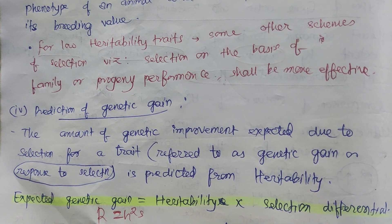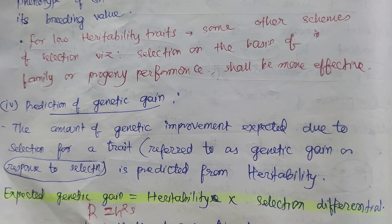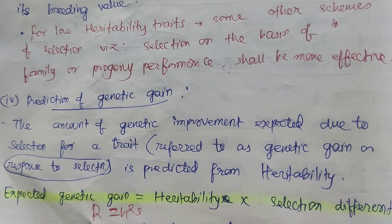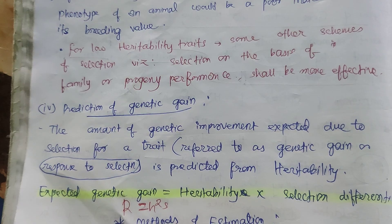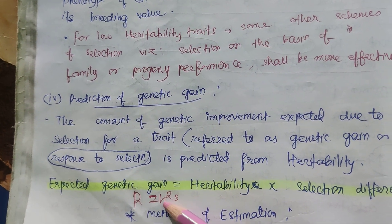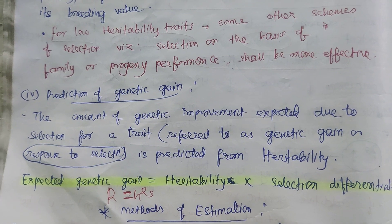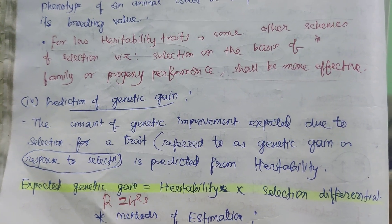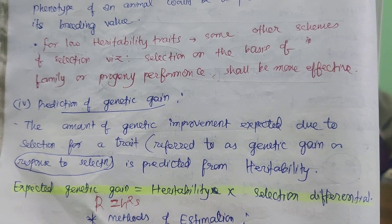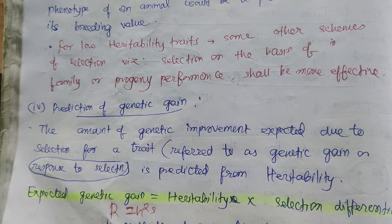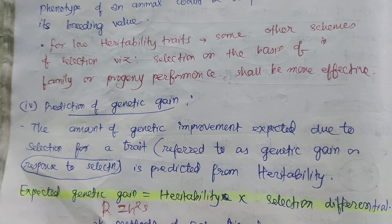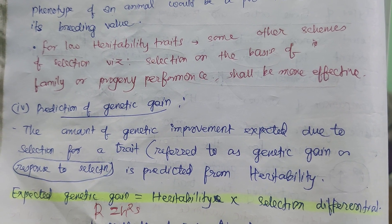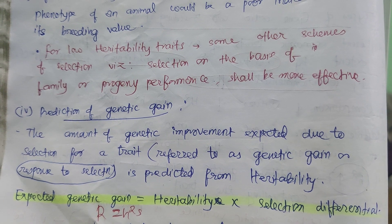The fourth point on the usefulness of heritability is the prediction of genetic gain. Genetic gain, also called response to selection, is given by the formula R = h²S. Genetic gain is the amount of genetic improvement expected due to selection for a trait. For example, if you select a trait you want to promote for better economic purposes, you can predict the amount of genetic improvement with the help of heritability.